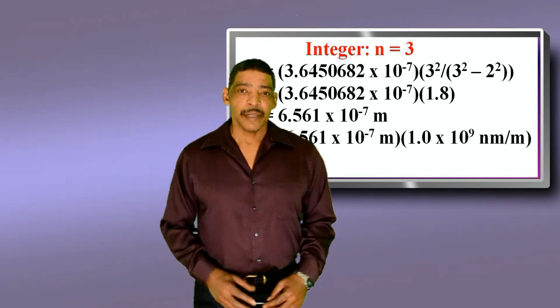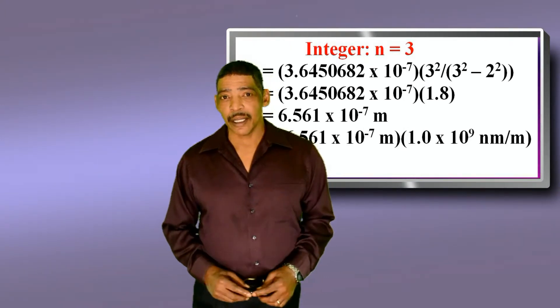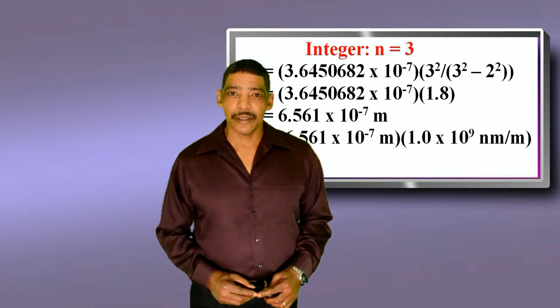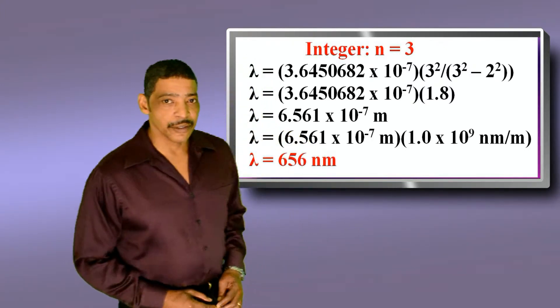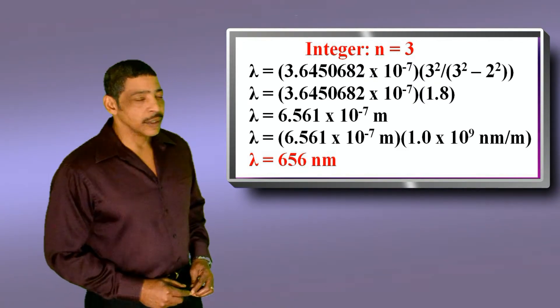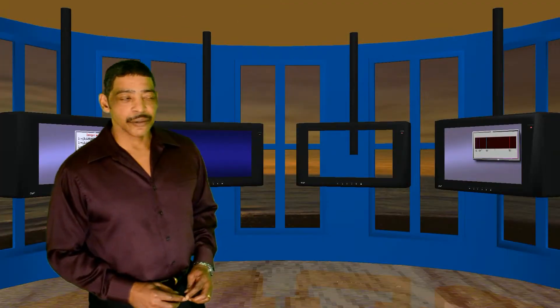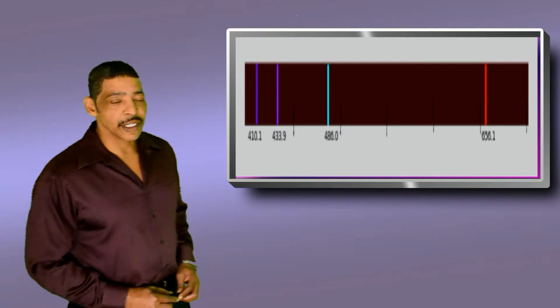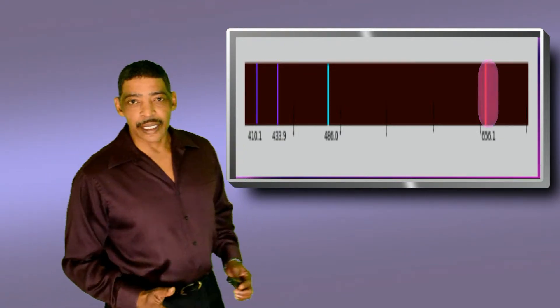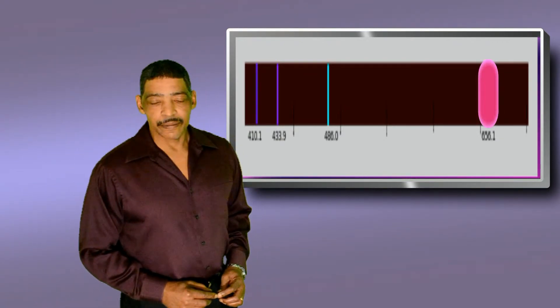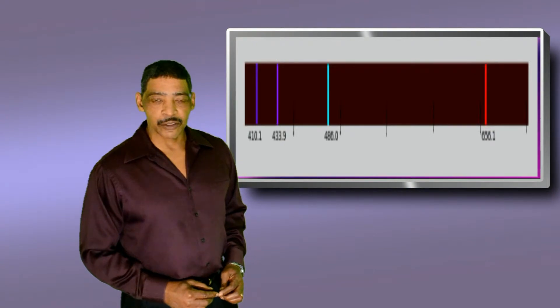To convert meters to nanometers, simply multiply by 1.0 times 10 to the 9 nanometers per meter. This will equal 656 nanometers. And 656 nanometers will create the red line found in hydrogen's bright line spectrum.